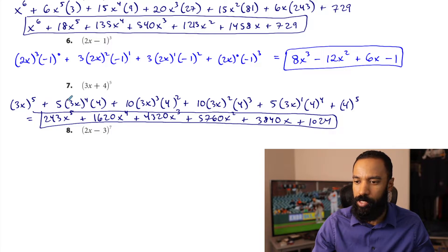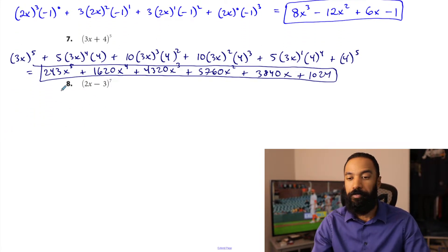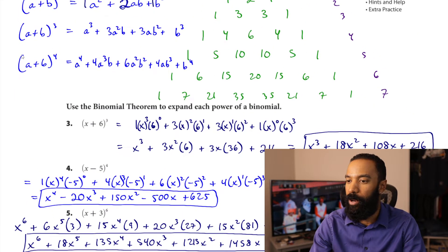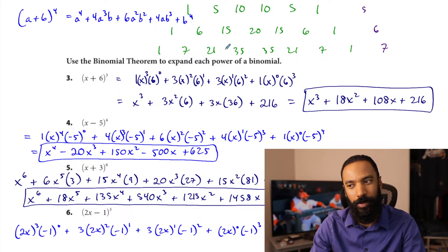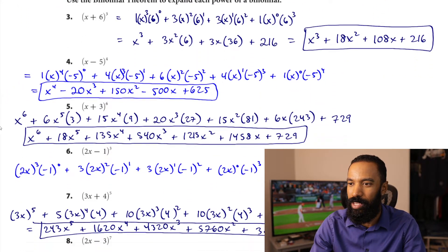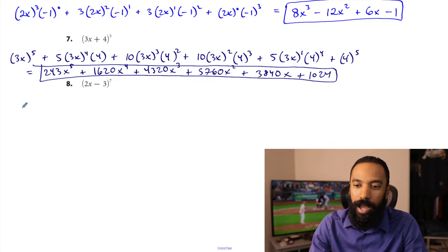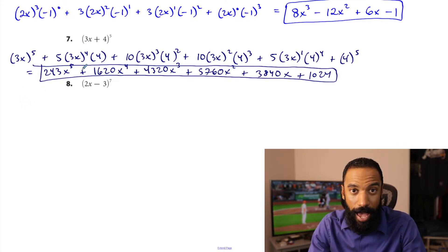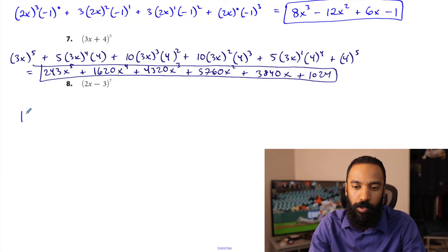Now to the seventh power: one, seven, twenty-one, thirty-five, thirty-five, twenty-one, seven, and one. First term: 2x to the seventh — 2 to the seventh is 128, so 128x to the seventh. Next: 7 times 2x to the sixth — 2 to the sixth is 64 — times negative 3 to the first. Then 21 times 2x to the fifth — 2 to the fifth is 32 — times negative 3 squared, which is 9.